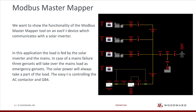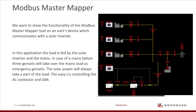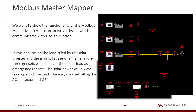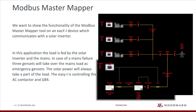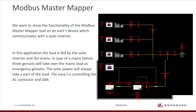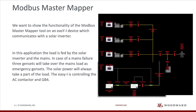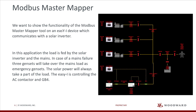In this application, the load is fed by the solar inverter and the mains. In case of a mains failure, three gensets will take over the mains load as emergency gensets. The solar power will always take a part of the load. The EasyEye is controlling the AC contactor in GB4. It also manages the solar inverter and supplies a maximum of solar power to the application. For this, it acts as a Modbus Master in the application and receives data from the solar inverter.